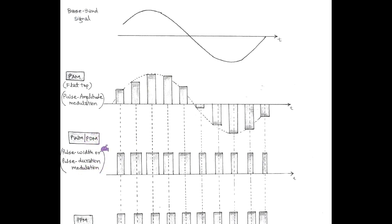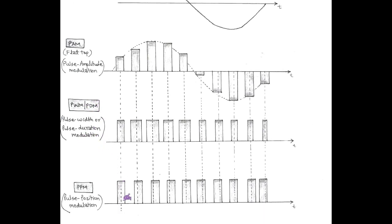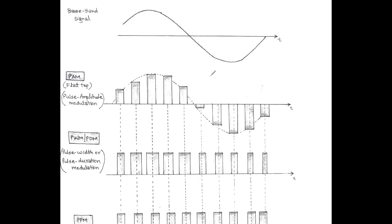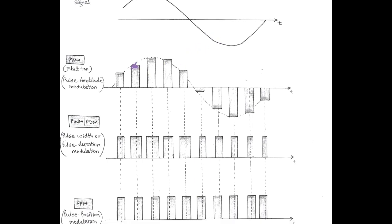In pulse position modulation, the amplitude and width of each pulse remain constant; only the position is changed according to the message signal. So in PAM, the width and position of each pulse are fixed, and only the amplitude varies according to the message signal.